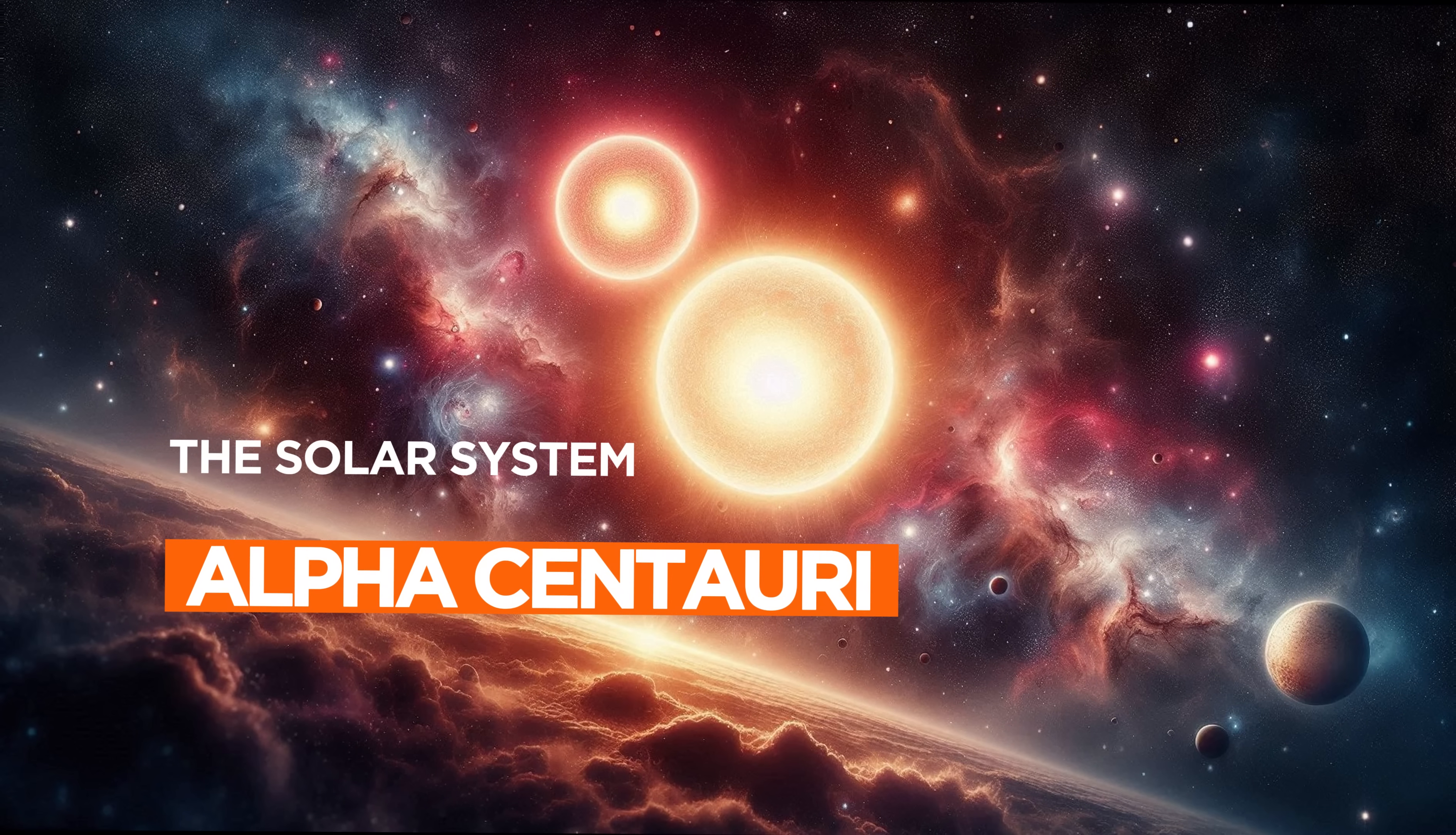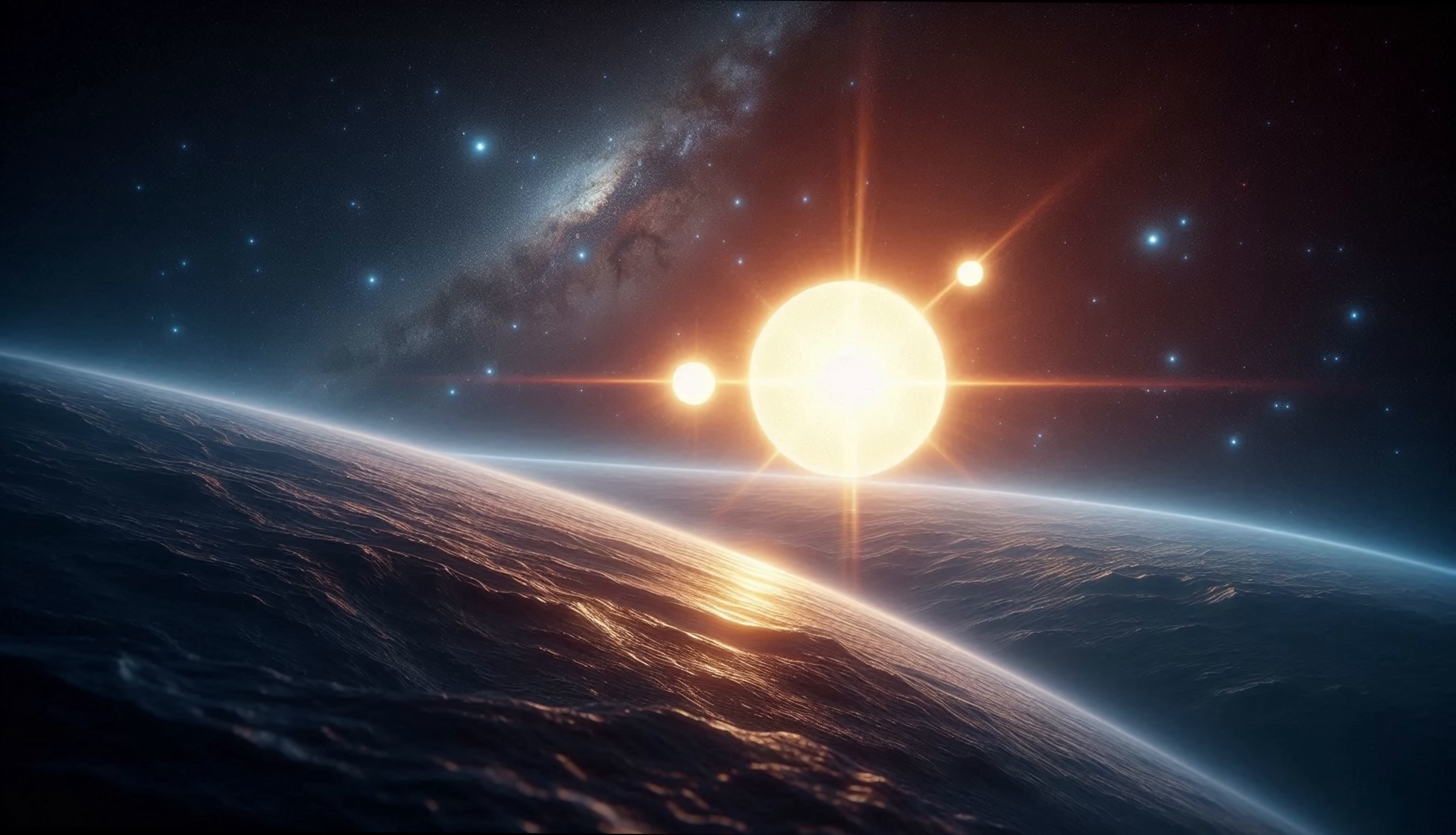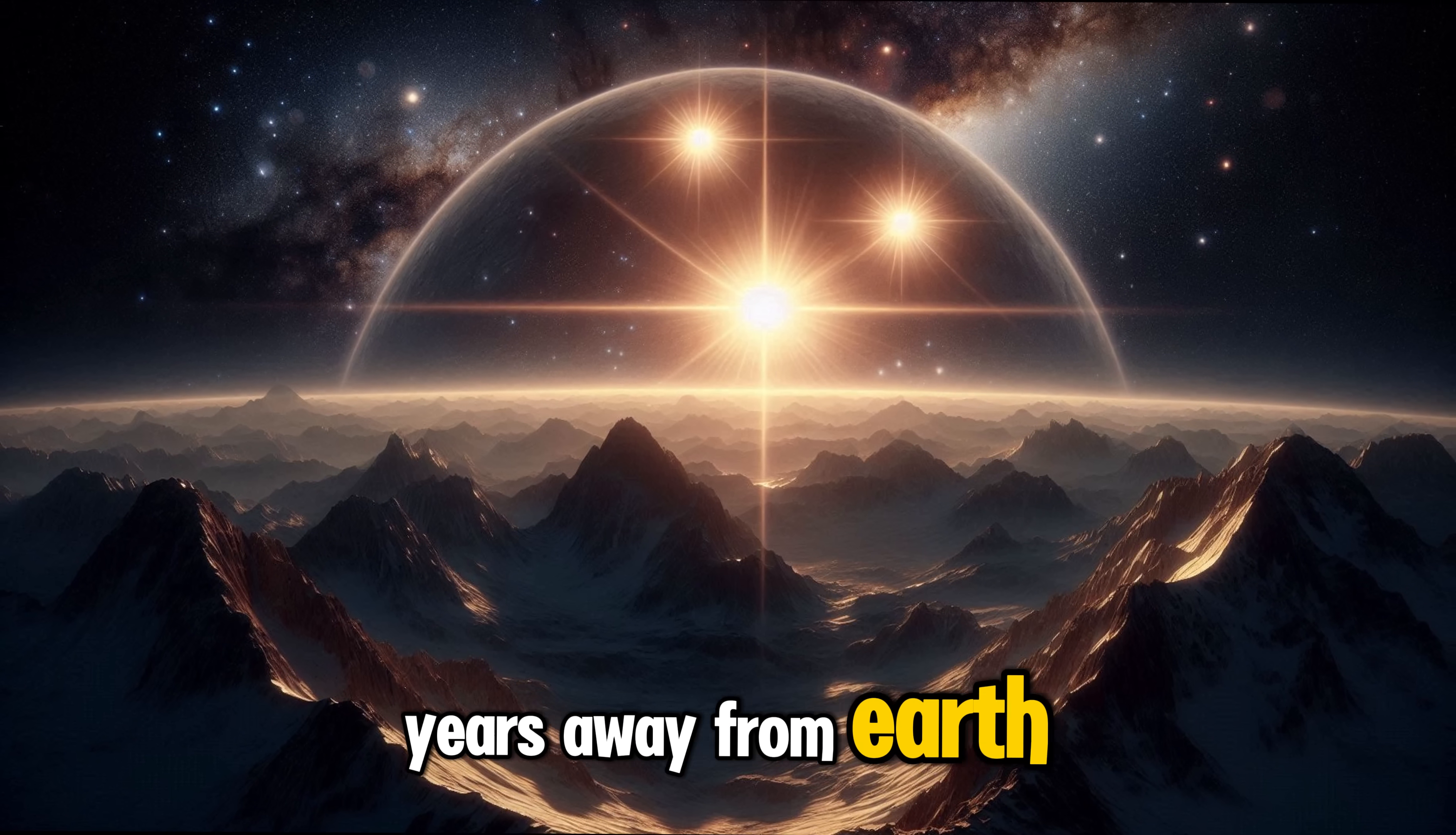The Alpha Centauri. First up is Alpha Centauri, the closest star system to us. It's actually a triple star system with three stars: Alpha Centauri A, B, and Proxima Centauri. Proxima Centauri is the closest of these stars and has a planet that might be in the habitable zone. Would you like to visit a star system that's just over four light years away from Earth?